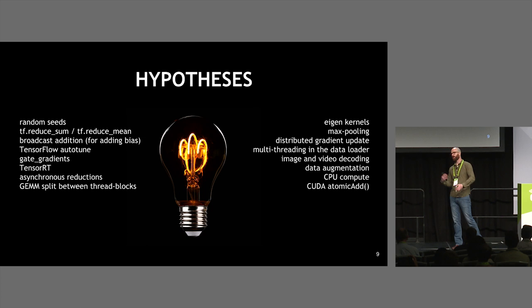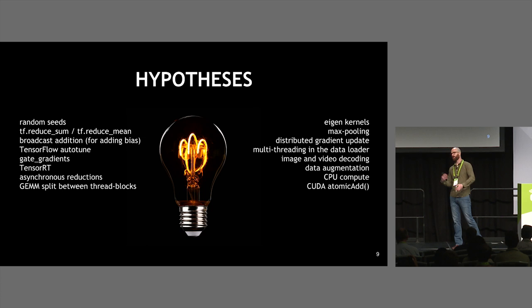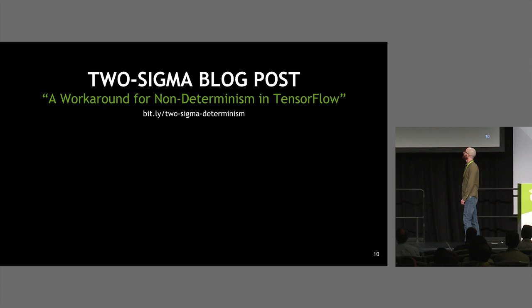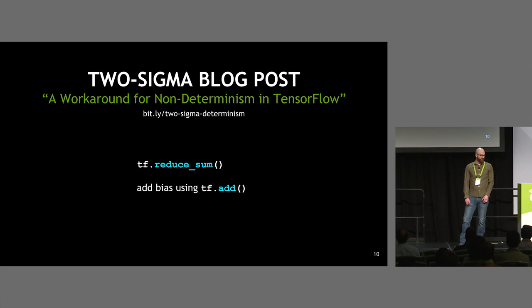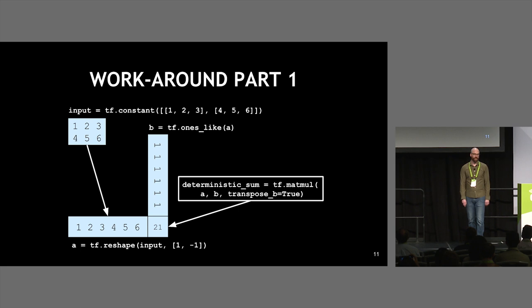I surveyed the literature and talked to various people about the hypotheses for sources of non-determinism. I found a great blog post from Two Sigma pointing out that at the time of writing, two ops were non-deterministic in TensorFlow on GPUs: reduce sum and add. They came up with a model-level workaround using MatMul. But now these two ops are deterministic, so all that effort was a complete waste of time.